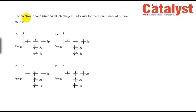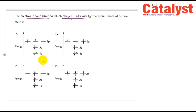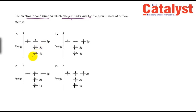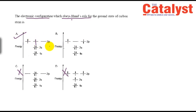This question about electronic configuration involves filling order rules. The given structure is not from NCERT. Checking the Aufbau and Hund's rules: one of the options is wrong because pairing starts before 2p is half-filled. As per the energy rule, electrons fill 2s before 2p, one electron at a time. Option A is the right answer.